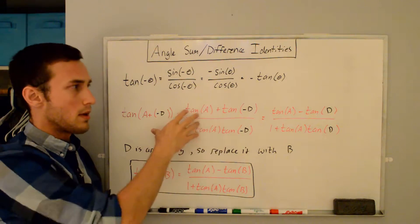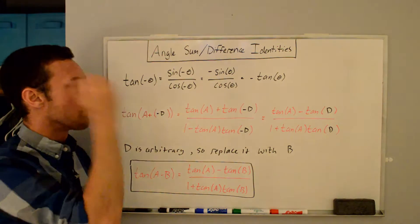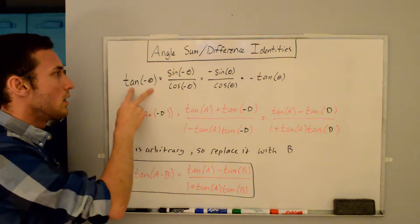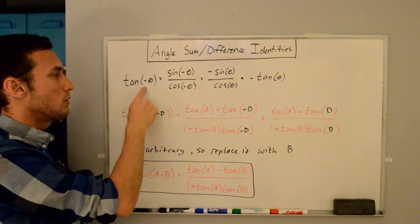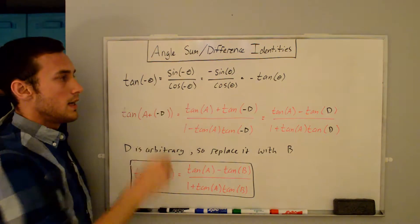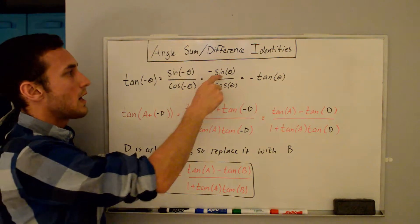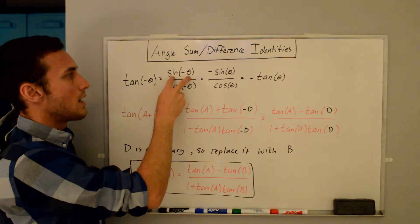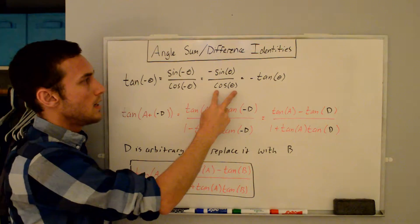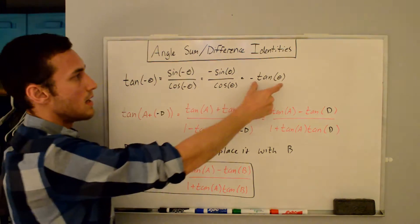Now let's derive the difference identity for tangent. You could start the same way we did for the sum identity by placing in the angle difference identities for sine and cosine, but you can also use the odd-even function approach. Tangent of negative theta equals sine of negative theta over cosine of negative theta. Since sine is an odd function, sine of negative theta equals negative sine theta, and cosine is an even function, so cosine of negative theta equals cosine theta. Therefore, tangent of negative theta is equal to negative tangent of theta.